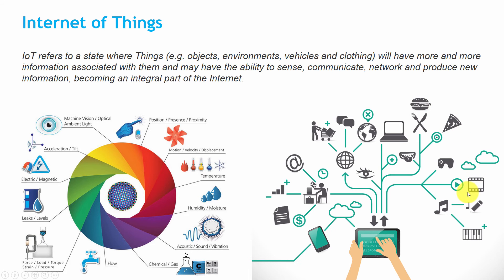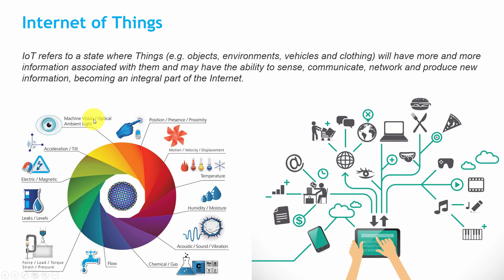Here are a few examples of IoT sensor data such as position, velocity, motion, temperature, humidity, acoustic, chemical, flow — for example water flow — force, liquid levels, electromagnetic, acceleration, tilt, machine vision, and optical ambient light. All these applications can be controlled by using Internet of Things technology.